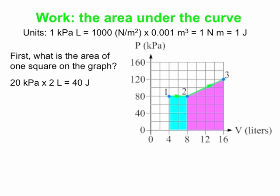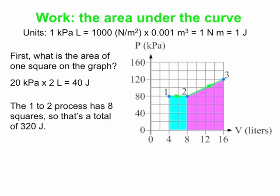Now we just count squares. For the 1 to 2 process, we have 8 squares. 8 squares at 40 joules per square gets us a total of 320 joules of work was done by the system for the 1 to 2 process.